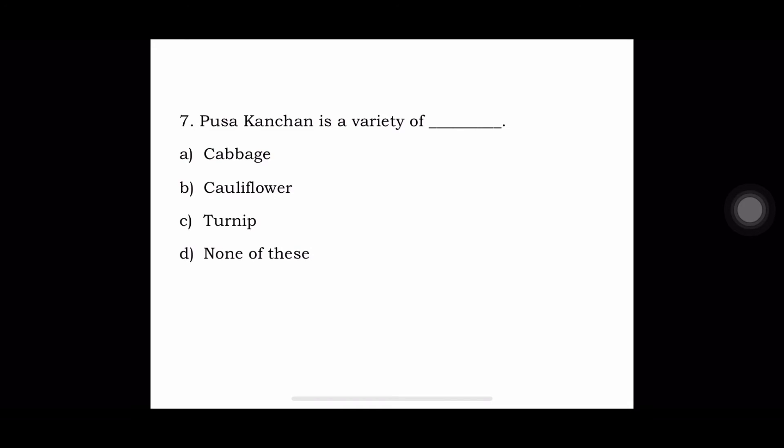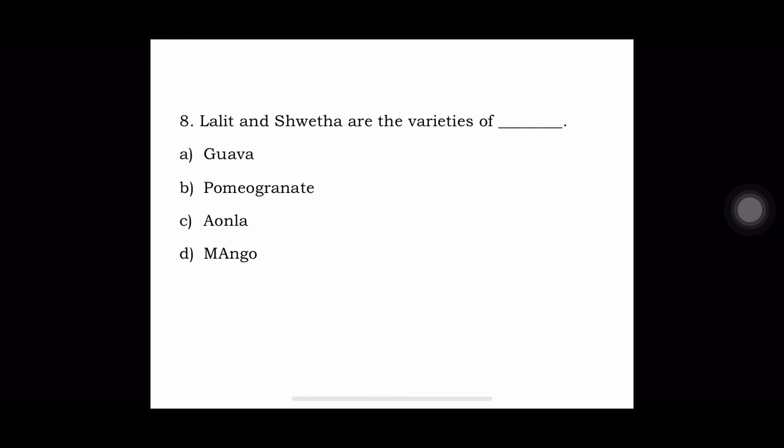Next question: Pusa Kanchan is a variety of — A. Cabbage, B. Cauliflower, C. Turnip, or D. None of these. The answer is Pusa Kanchan is a variety of turnip.